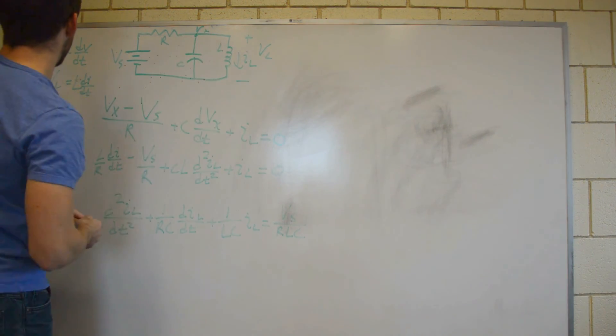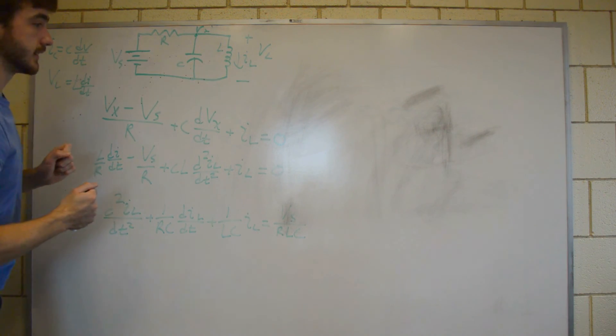And then we remember that whenever we solve a second order differential equation for a circuit, we either want all the terms with respect to the voltage across a capacitor, or all the terms with respect to the current through an inductor. In this case, we chose the current through the inductor method, because we realized that Vl equals Vx, and Vl is just L di dt. So everywhere we saw Vx, we just replaced it with L di dt. And that was this step.